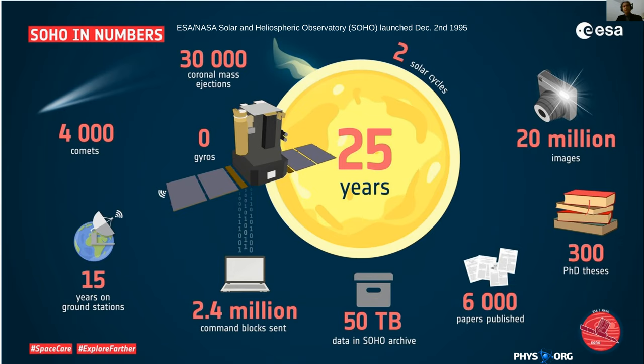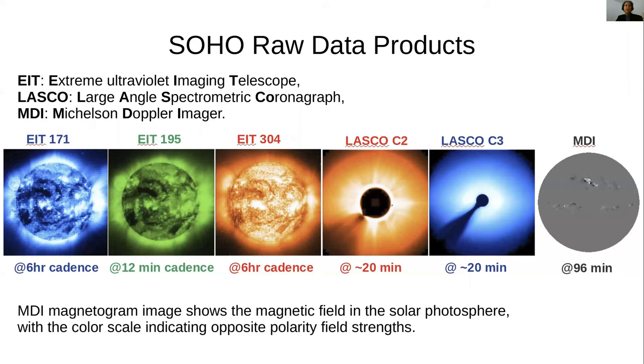Before we get into details of the software pipeline, let us briefly go over the SOHO raw data products. These consist of three different imaging instruments: the EIT, which is the Extreme Ultraviolet Imaging Telescope; the LASCO C2 and C3 instruments, where LASCO stands for Large Angle Spectrometric Coronagraphs; and the MDI, which is the Michelson Doppler Imager.